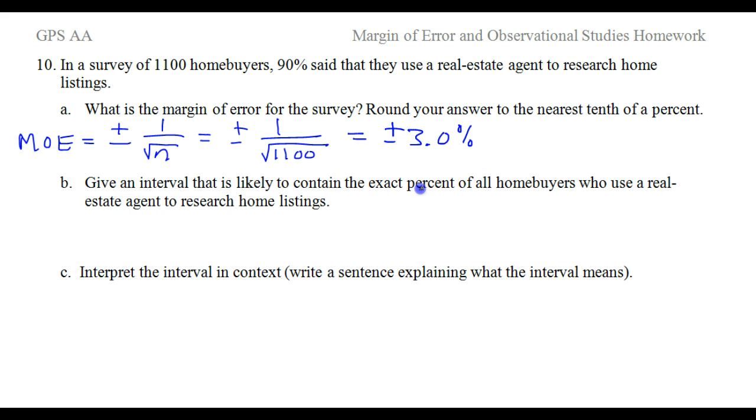So that's my margin of error. Now, give an interval that is likely to contain the exact percentage of all home buyers who use a real estate agent. Our survey said 90%, that's just the survey sample. The true percent of all the home buyers is likely to be this 90% plus or minus the 3%. So that means 90% minus 3%, that's the minus of plus or minus, to 90% plus 3%. So 90% minus 3% is going to be 87%, so 87% to 93%.